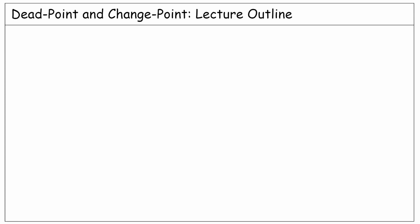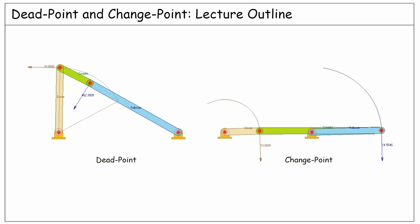In this lecture, we want to understand the two situations of dead point and change point which might happen during the motion of a four bar linkage.